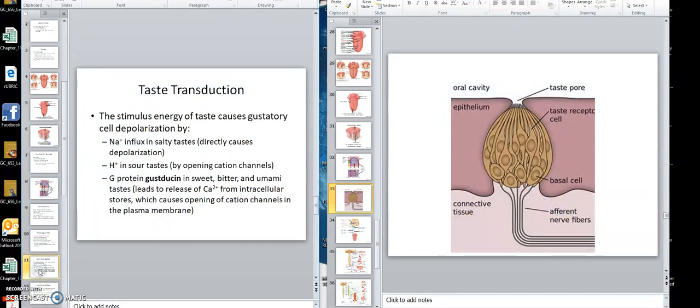The graded potential. The stimulus energy of taste causes gustatory cells depolarization. Sodium influx into the salty taste directly causes depolarization. Sour by opening cation channels. G-proteins gustducin in sweet, bitter, and umami.